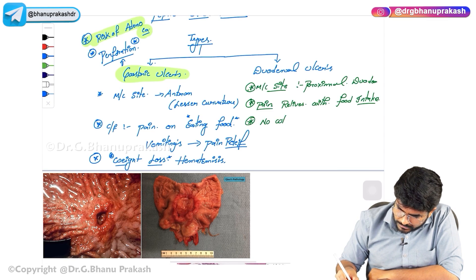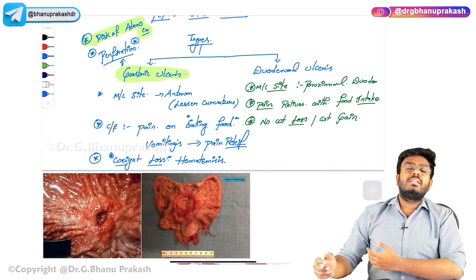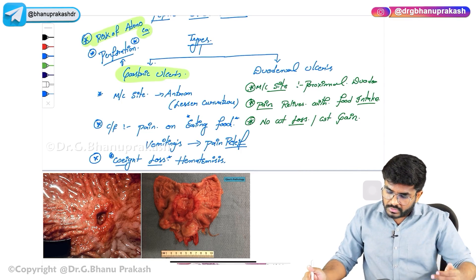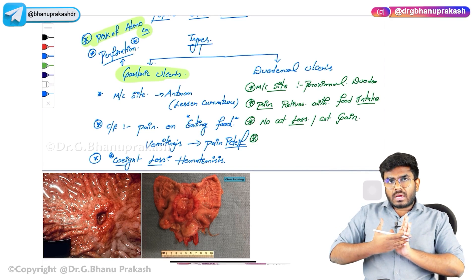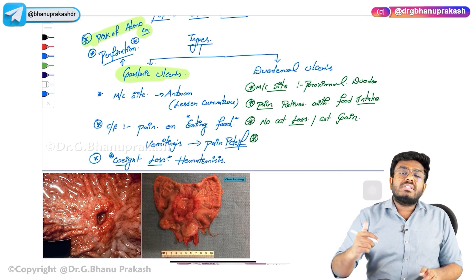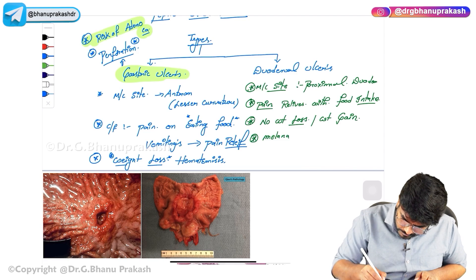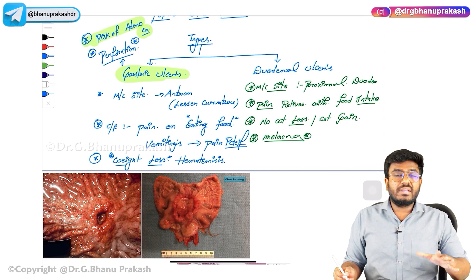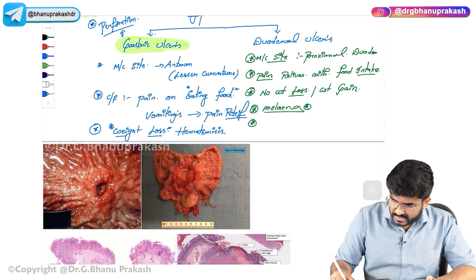In duodenal ulcers, there is no weight loss — weight loss is usually not seen. In some cases, even weight gain will occur, because whenever this patient takes food, the pain is relieving, so he will be more likely to eat. There might also be a chance that weight gain occurs. Since duodenum is more distal when compared to the stomach, whenever there is a bleeding duodenal ulcer, the bleeding will come out in the feces, causing melena — dark colored stools. This happens because the blood is degraded by enzymes.